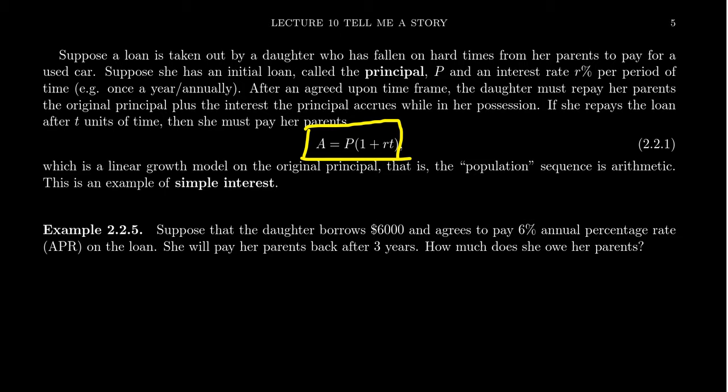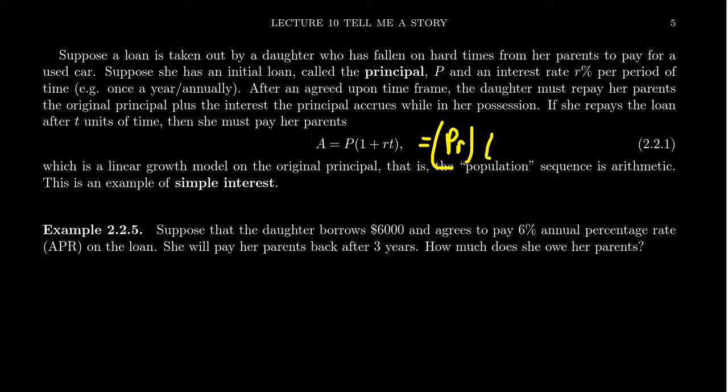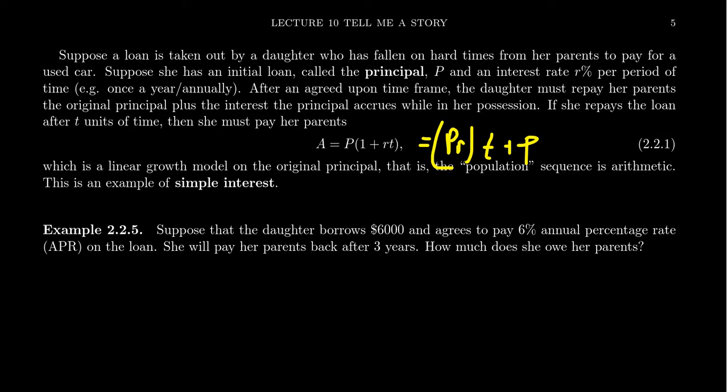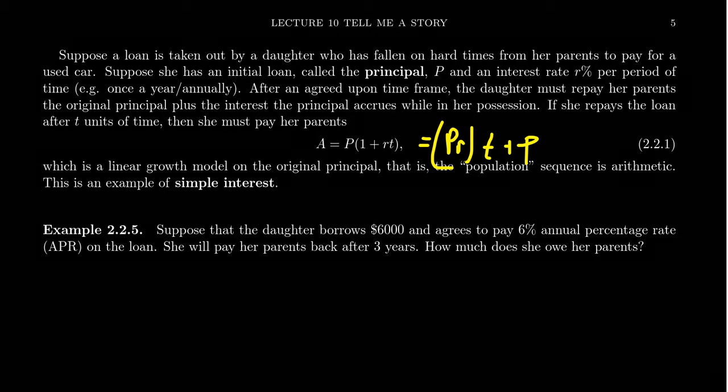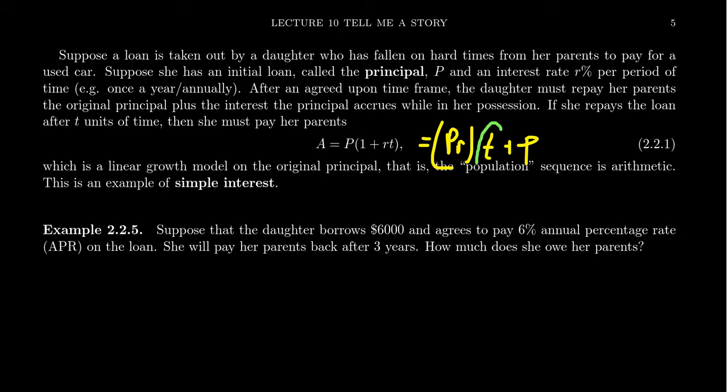When you distribute it out again, you're going to get P times R times T plus P. This is actually a linear function, where your variable is time. How long does it take for you to pay back the loan? Your Y-intercept is the original principal. If you borrow the money and then paid it back immediately, no time elapsed, then you would pay no interest and you would pay just back the principal.